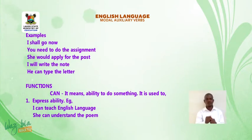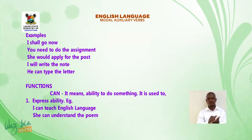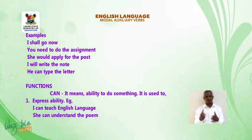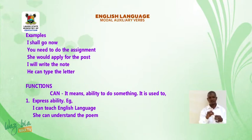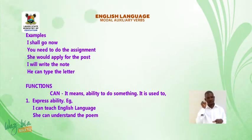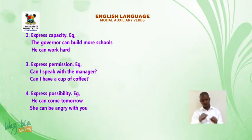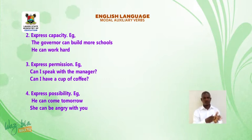Now let us start with the functions of these various modal auxiliary verbs. Let us start with CAN. It means ability to do something. It is used to: one, express ability — for example, I can teach English language; she can understand the poem. Two, to express capacity — for example, the governor can build more schools; he can work hard.